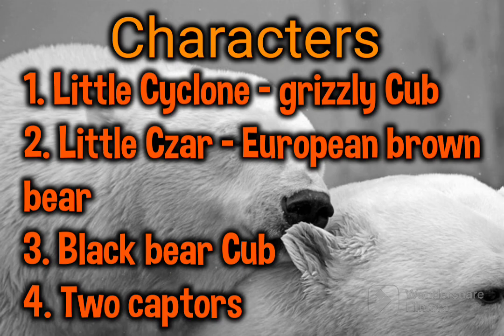The characters in this short story include Little Cyclone, a Grizzly Cub; Little Sour, a European Brown Bear; and a Black Bear Cub. These were the major characters in the short story Little Cyclone: The Story of a Grizzly Cub.